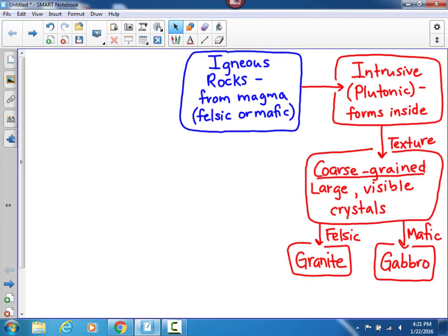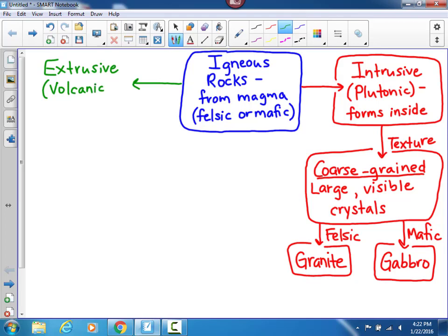Okay, let's do this second kind of igneous rocks. You could probably take a guess that the second kind of igneous rocks are going to be called extrusive. These are also sometimes called volcanic because they form outside the surface of the earth.